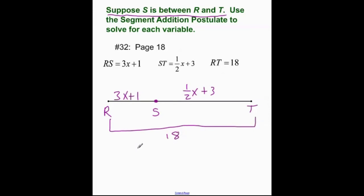So all we're going to do in segment addition postulate is this part plus this part equals the whole thing. So yes, we add this plus that equal sign to 18. Let's go ahead and do that. 3x plus 1 plus 1 half x plus 3 is equal to 18.